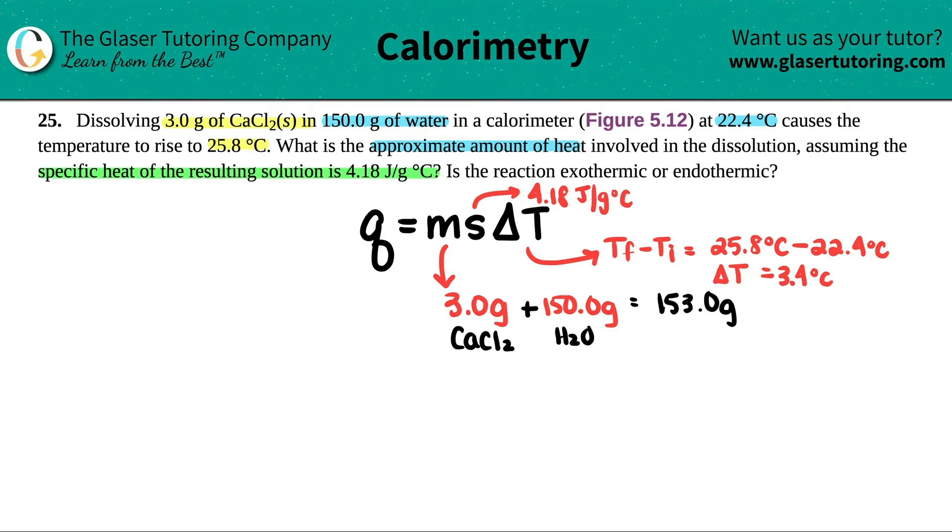I'm ready to plug in the numbers. Q equals my total mass, which was 153 times the 4.18 times the 3.4. Pretty simple, right? 153 times 4.18 times 3.4. And I see two sig figs. So this would be 2200 joules. Now, since this is a big number, maybe we will convert to kilojoules. How do we go from joules to kilojoules? We just divide by a thousand. So this would be the same thing as saying 2.2 kilojoules.